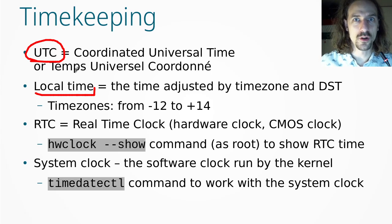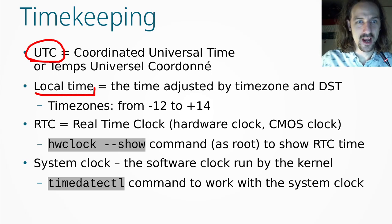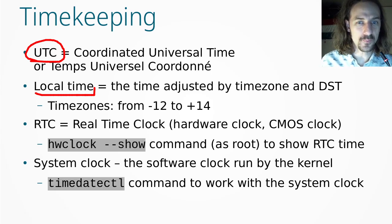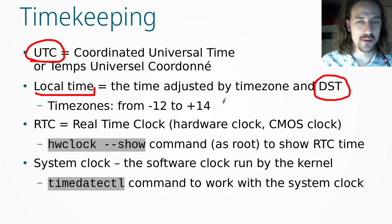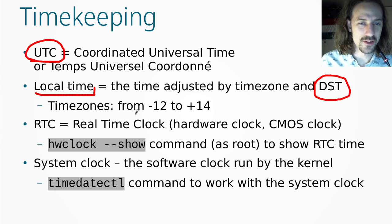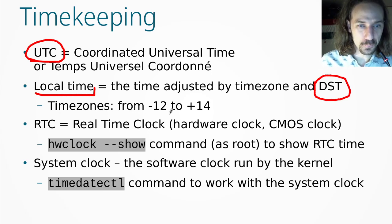Local time is your time wherever you are on the planet, because the Earth is round — it's a globe. UTC is very good if you want every computer to have the same time all over the world, but as a human you want your noon at 12 PM when the sun is up and 12 AM in the middle of the night. So based on that we add or subtract some hours to the UTC time based on your location on the globe.